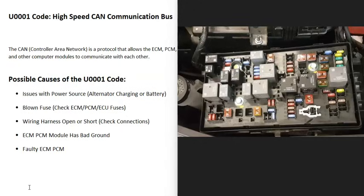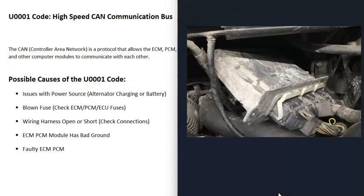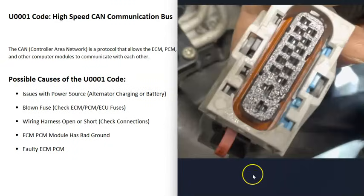The next possible cause is some kind of issue going on inside the wiring — something like a bad connection, an open, or a short. Basically, all these wires running around to all the different computer control modules need to be checked. You can check the connections and be sure they're seated all the way in, and check the pins to be sure they look good. Sometimes when these are located up inside the engine compartment, the connections can get grease on them, which can cause issues.